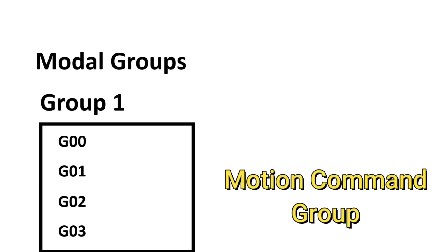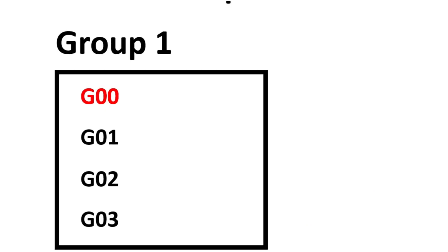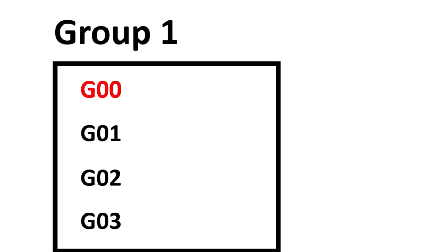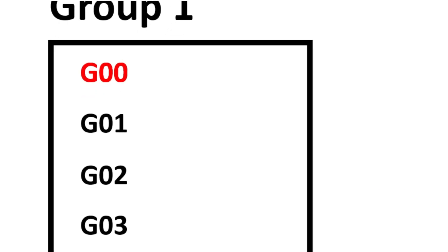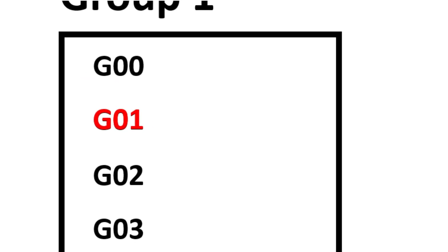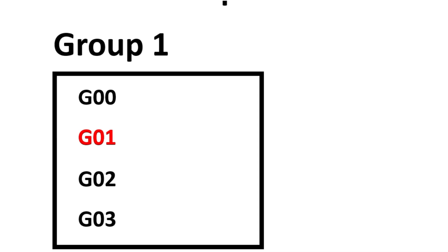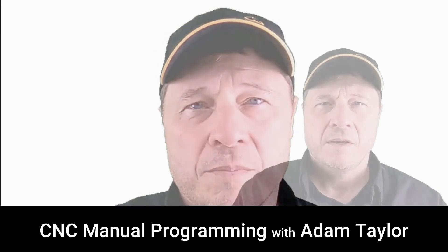Group one is the motion command group. In the motion command group, only one code in that group can be used at any time. As soon as you use another code from that group, it becomes active and disables the previous code from that group.